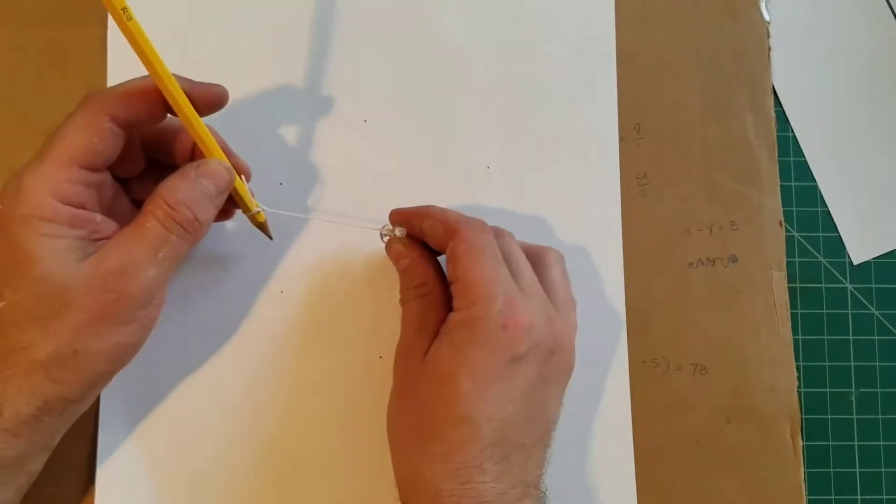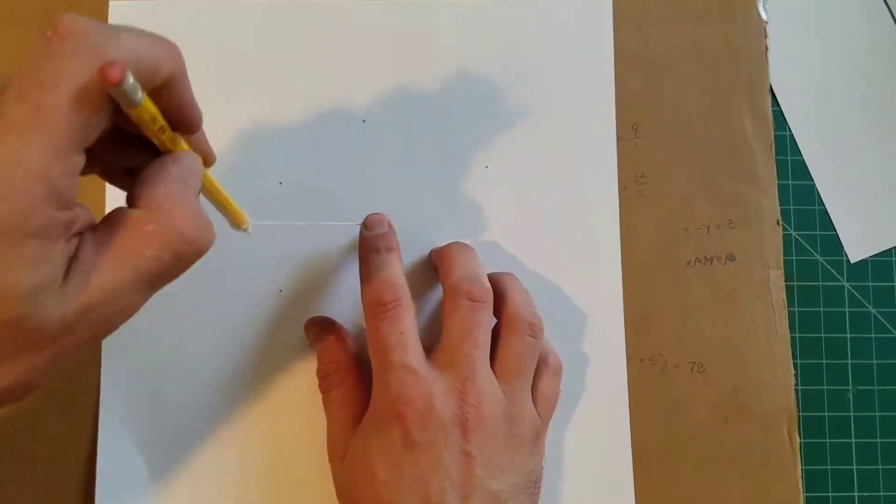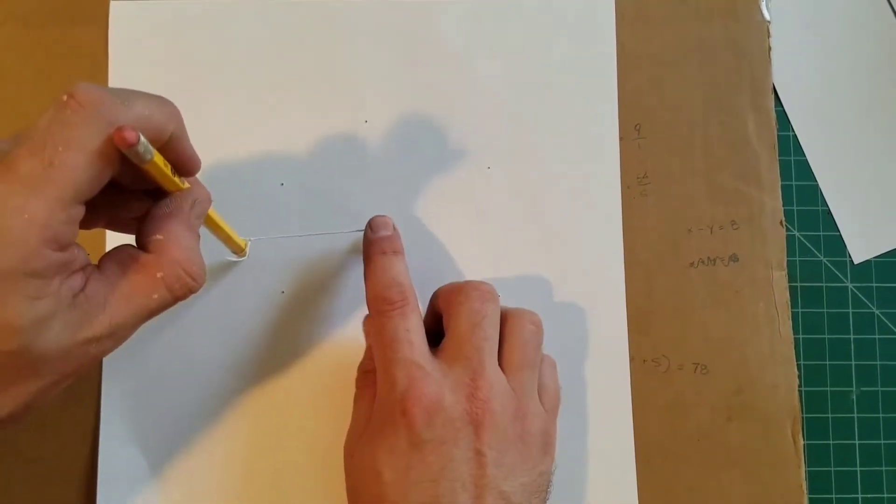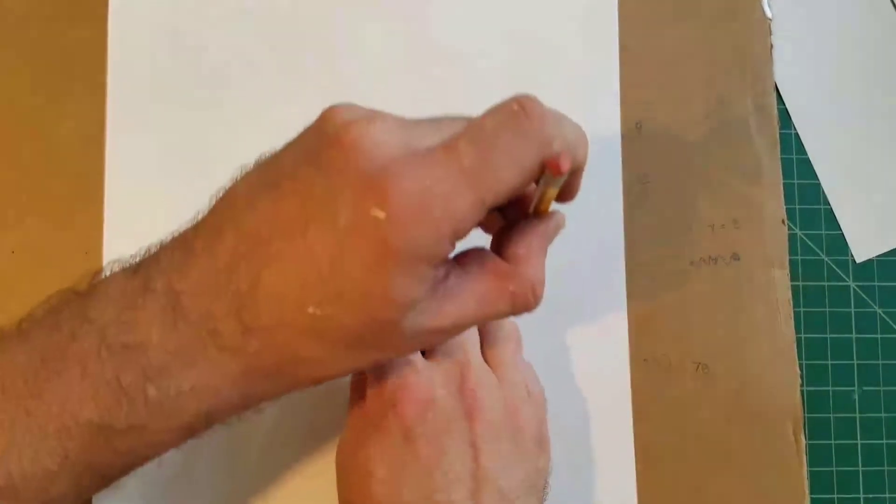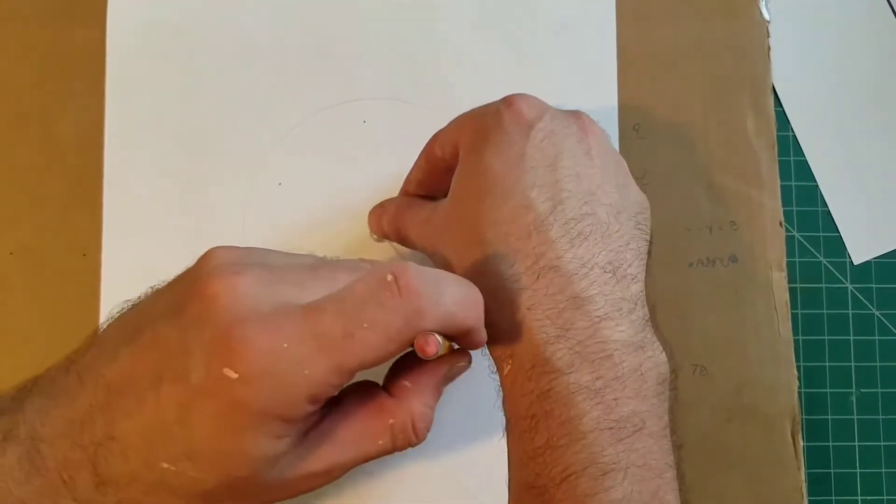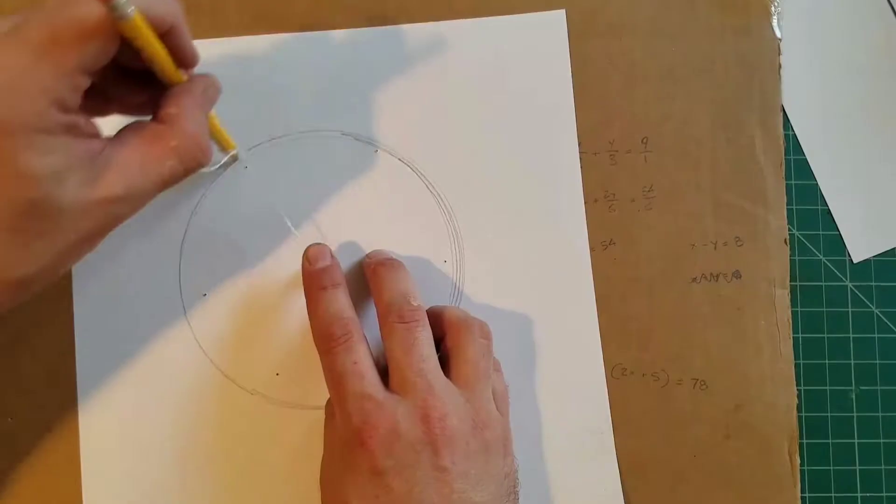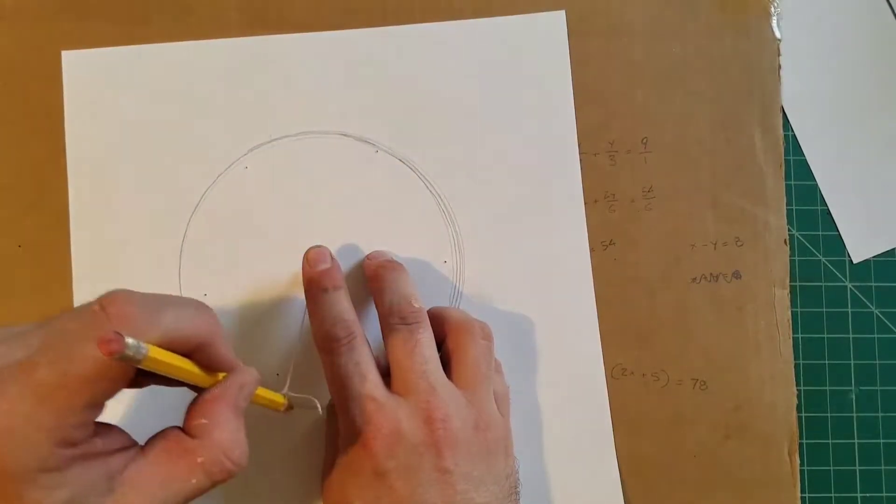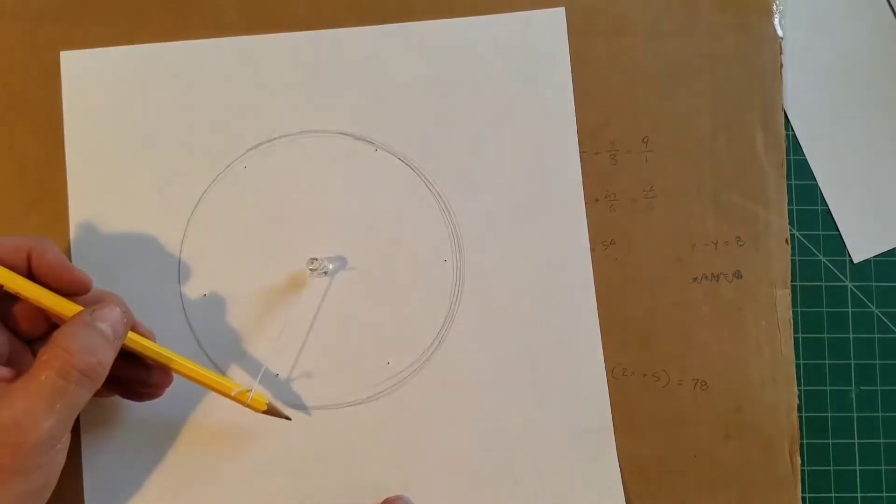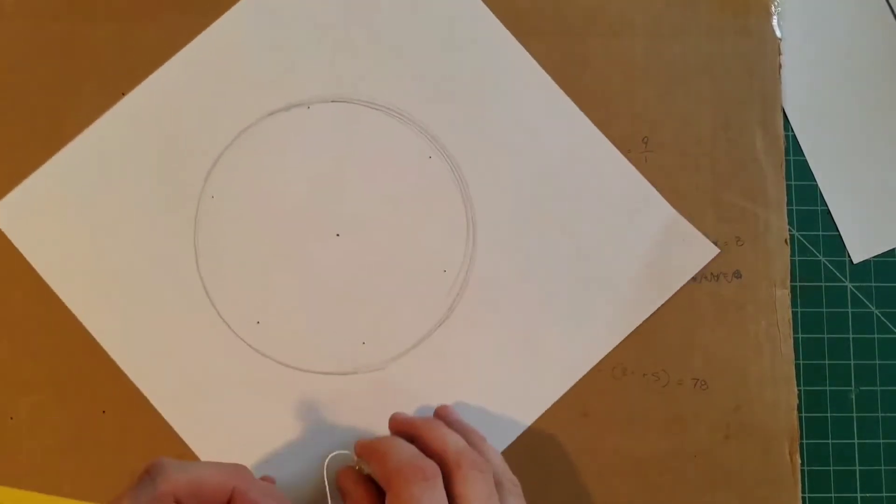Take my compass. I'm going to drive it into the middle of the paper, and I'm going to swing an arc. I have to move my hand because I'm in the way of myself. If you're unsure, it's okay to draw a couple lines. The average will turn out to be more correct than any one particular line.